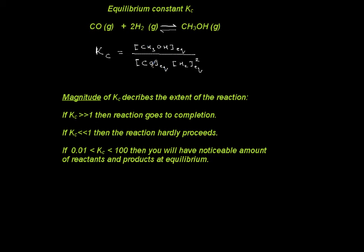The magnitude of Kc is a function of temperature. It also describes the extent of reaction — how far you go to the right-hand side toward products, or whether you stay as reactants, or somewhere in between. There are three possible cases. If the value of Kc is much larger than 1, then the reaction goes to completion as if there is no equilibrium, so you simply have one arrow going to products.